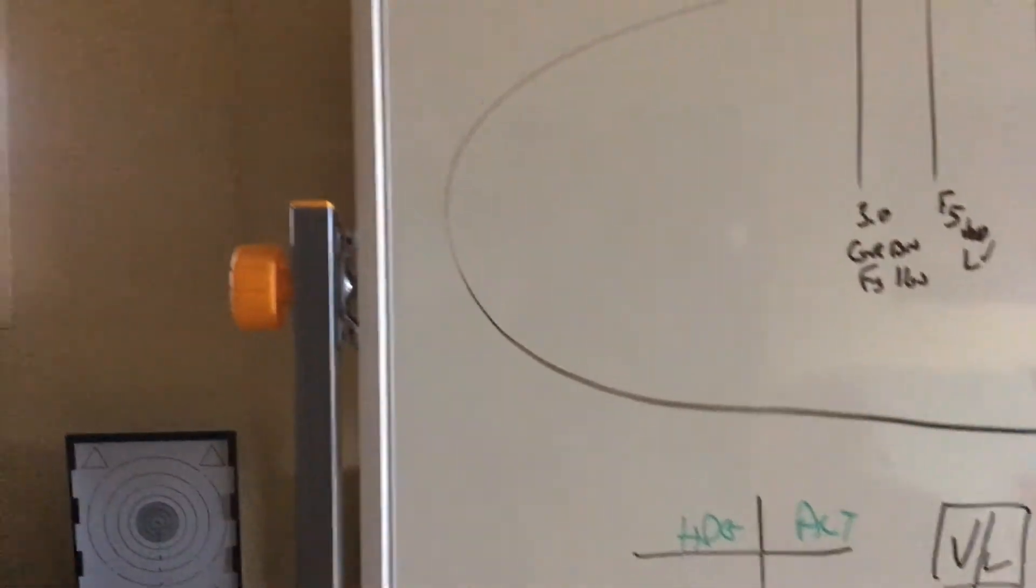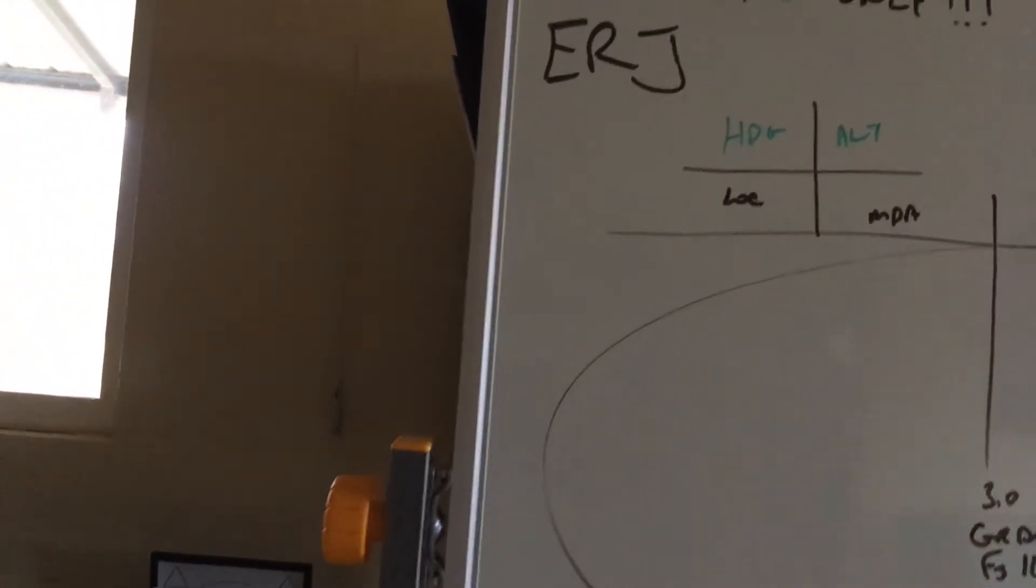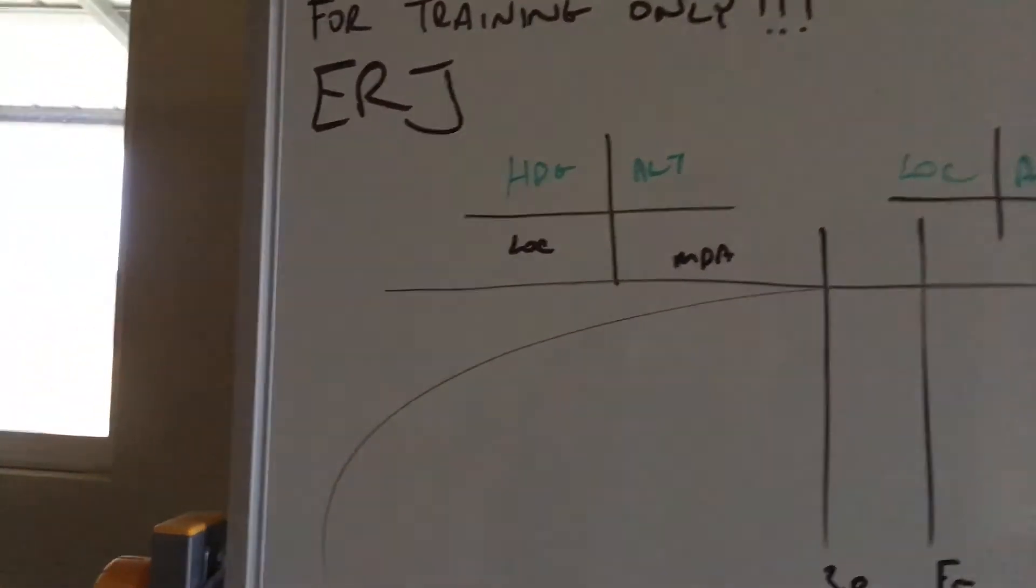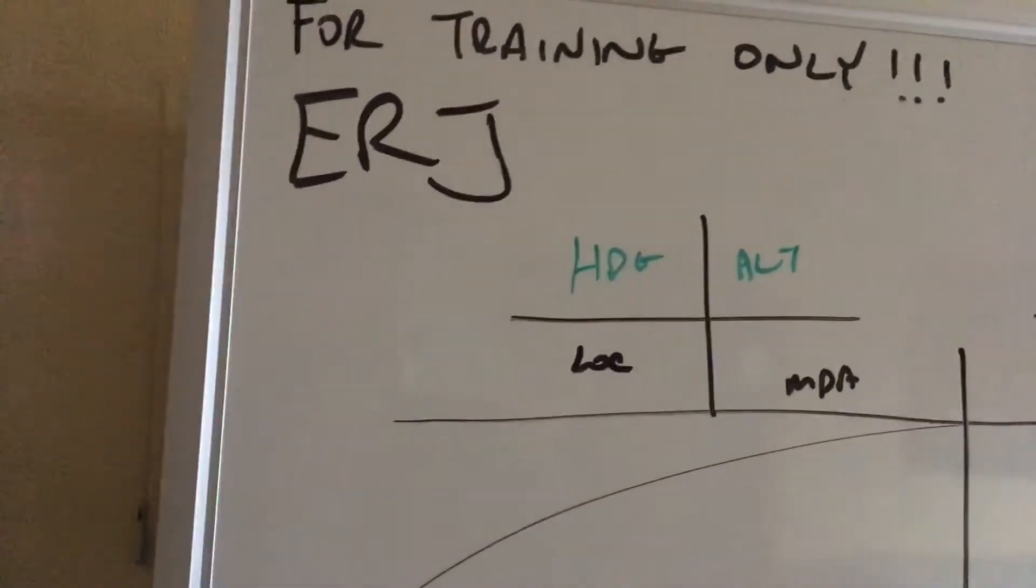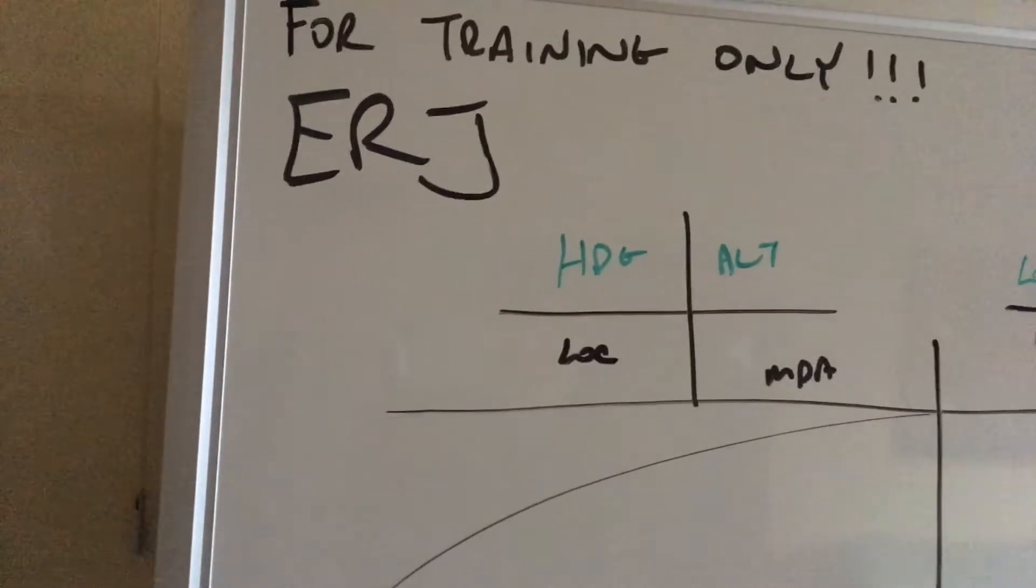We're getting vectored around and they say cleared for the approach. Anytime you're cleared for the approach, you set MDA in your altitude pre-selector and then you select NAV.